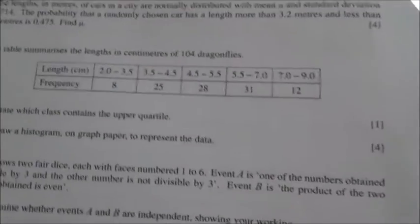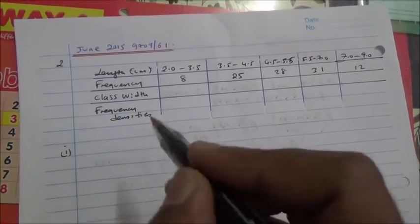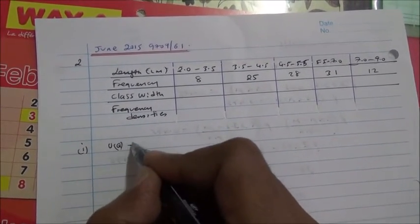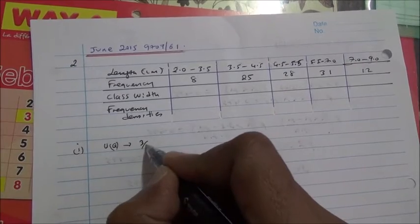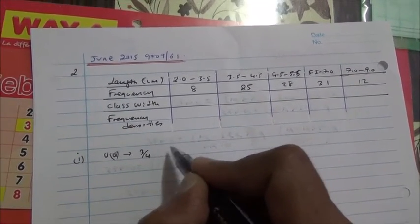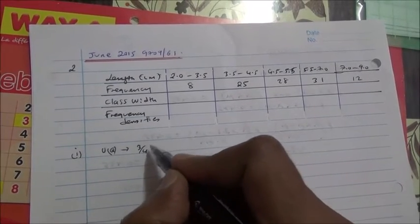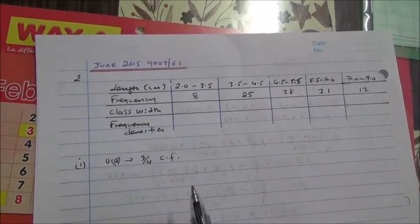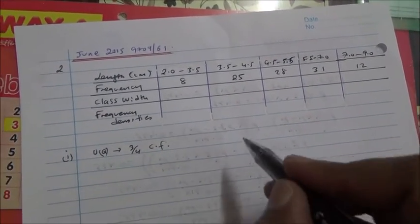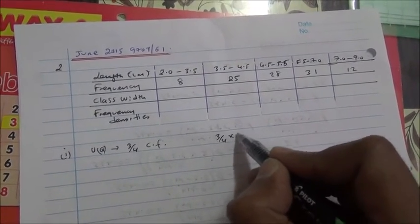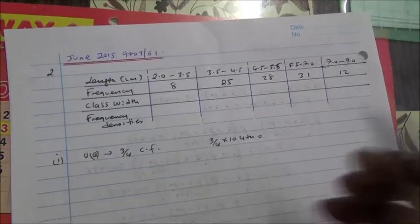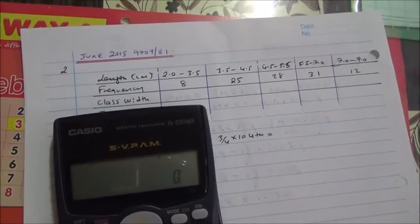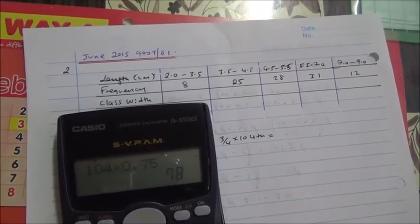For the first part of the question, how are we going to do it? We need to state in which class the upper quartile is. Now as we've learned from previous lessons, we should know that the upper quartile is basically found by taking three-quarter of the cumulative frequency. We have 104 dragonflies. So three-quarter of that is going to be 3/4 times 104, and that's going to give us 78.